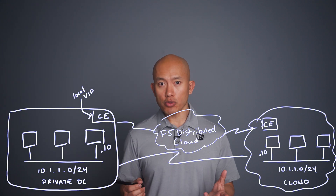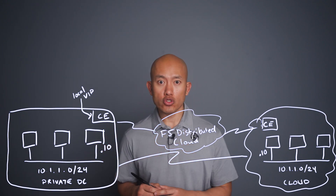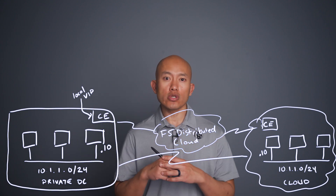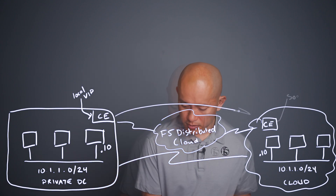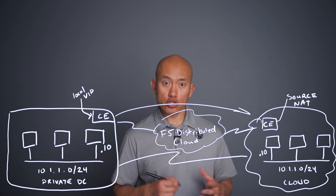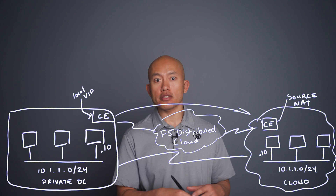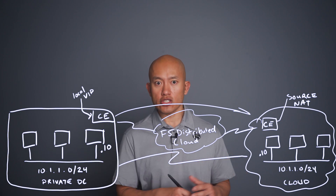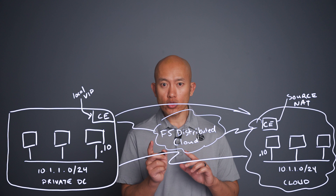For this example, on this side we'll have a local virtual IP address that represents the far-side application. There's no need to set up any special VPNs or other links. When the traffic reaches the destination site, a network address translation will be performed on the source IP address to hide the overlapping IP to the destination and also force traffic back through the path it came.